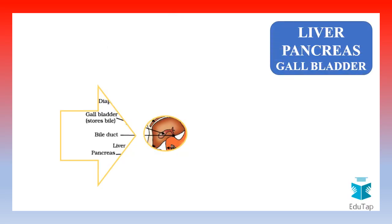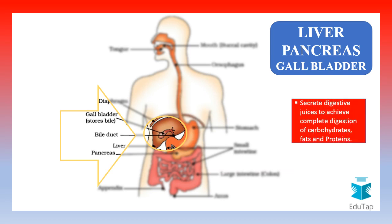The accessory glands like the liver, pancreas and gallbladder have a very important role to play in the digestion of food. They secrete digestive juices that help achieve the complete digestion of carbohydrates, fats and proteins in our body.